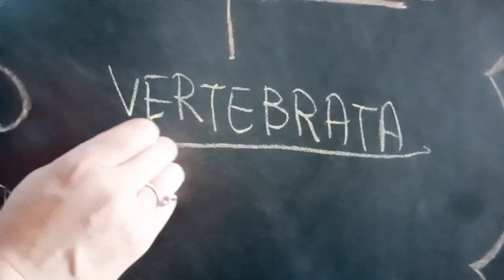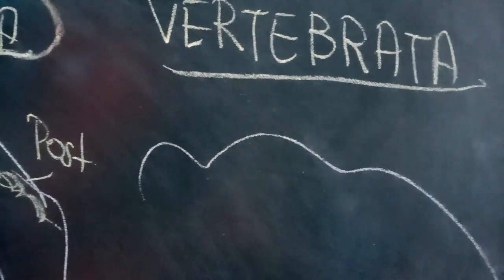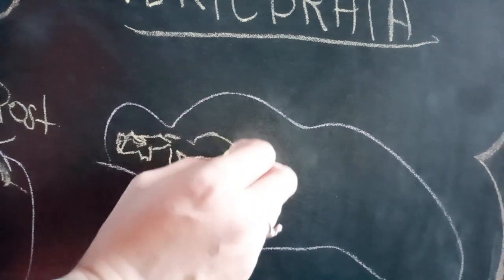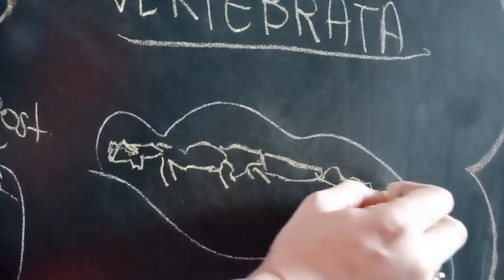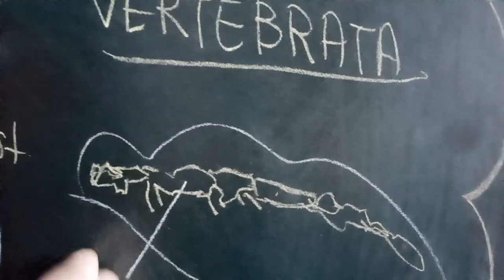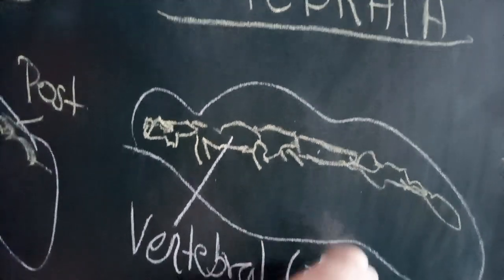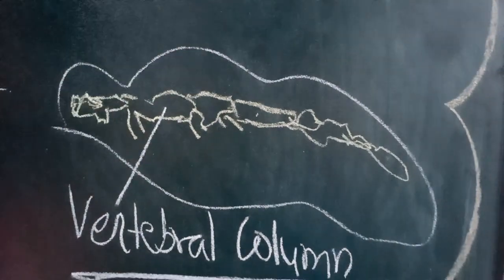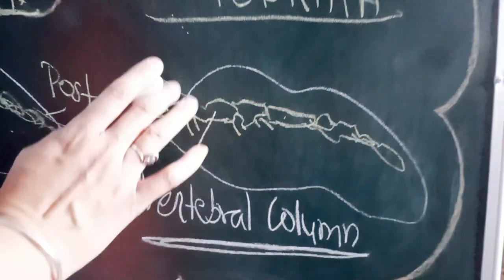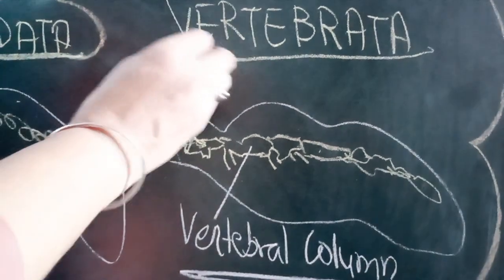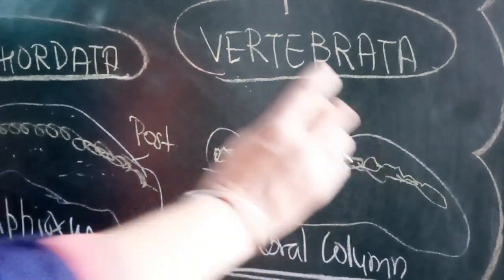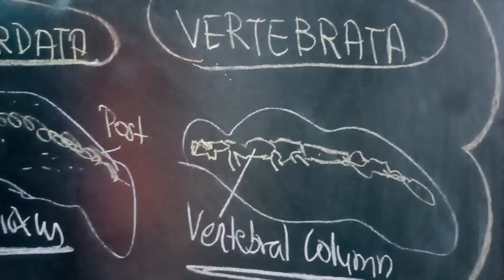As the name is indicating, in Vertebrata the notochord is present, but it changes into the backbone — the vertebral column — in the adult form. The embryo contains the notochord, but after development this structure changes into the vertebral column. From cyclostomes up to mammals, all organisms belong to this group called Vertebrata. The notochord changes into the vertebral column — that is why they are called Vertebrata.